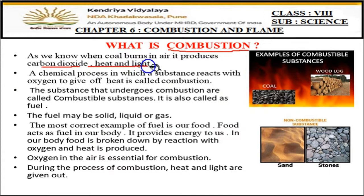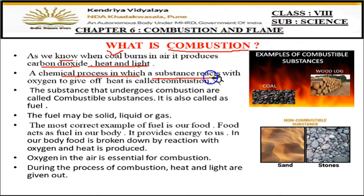When coal burns in air, it produces carbon dioxide, heat, and light. This is the general process — whenever something is burnt in the presence of air, it gives off heat and light. Coal is made up of carbon, so carbon dioxide is released when it burns. In the olden days, coal was burned in heaters. A chemical process in which a substance reacts with oxygen to give off heat is called combustion.